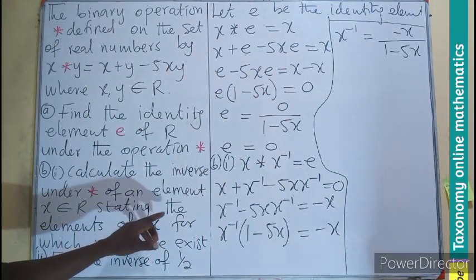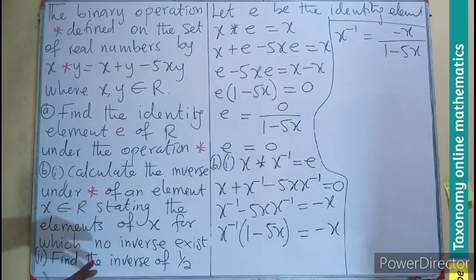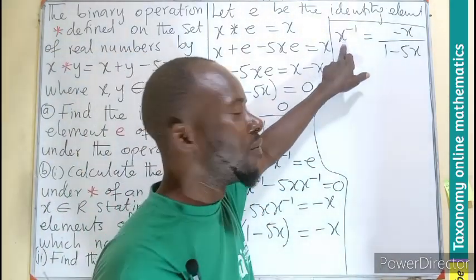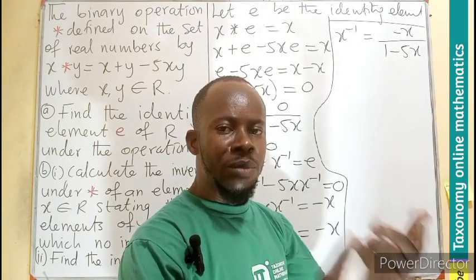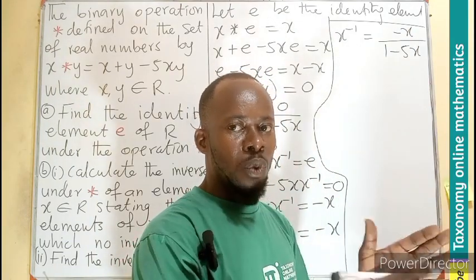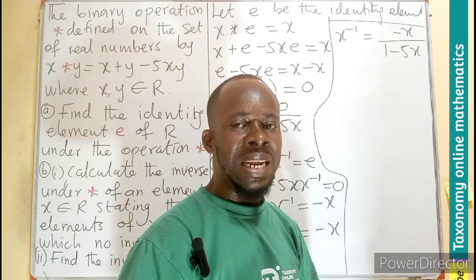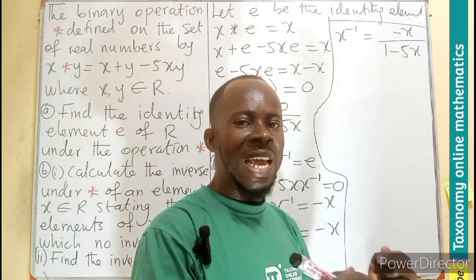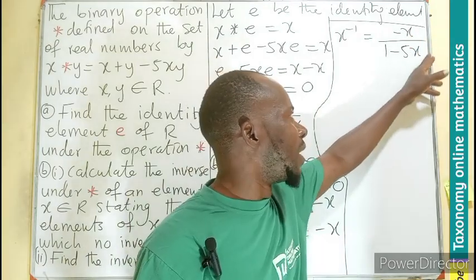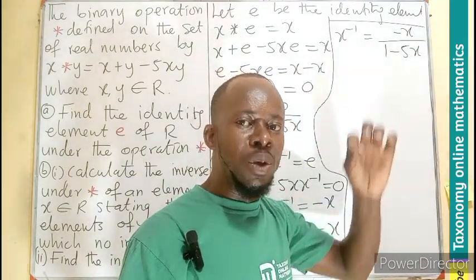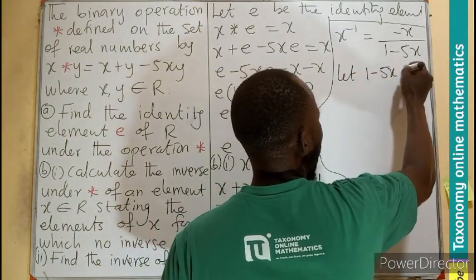But we are to state the element of x for which there is no inverse, or for which no inverse exists. This is the inverse. So it means that the values of x that will give me a real number is what is the inverse. But if I put in a number replacing x and the answer will not belong to the set of real numbers, it means the inverse will not exist at that value of x. So we don't want the denominator to be 0. If the denominator is 0, it becomes undefined. So we just say, let 1 minus 5x equals 0.